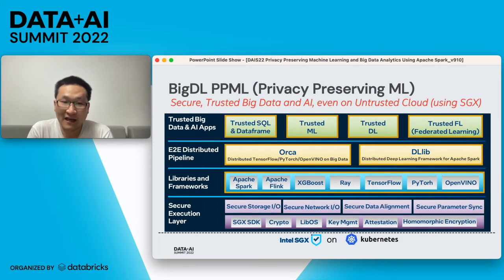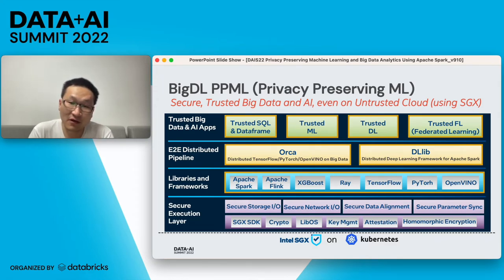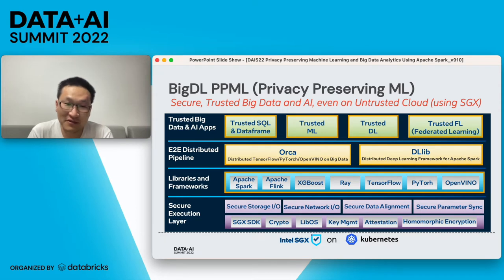We have many features in this privacy-preserving machine learning beyond Apache Spark. We also have Apache Flink support, deep learning support like XGBoost, TensorFlow, and PyTorch, as well as federated learning support, which is popular in academia and helps build a unified model across different parties. Due to time limitations, I just went through this architecture — please check our website for more details.